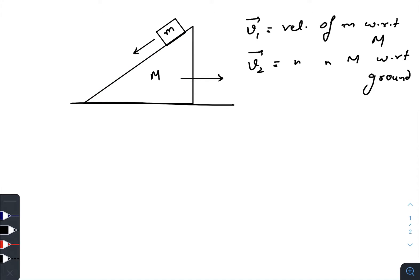While standing on the ground we will see that the velocity of this wedge is v2 towards right. So let us take a direction v2. And while standing on the wedge, the velocity of small m is v1.